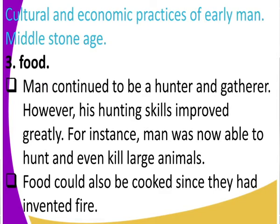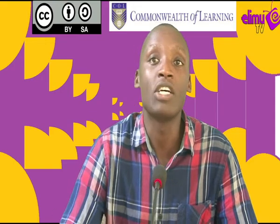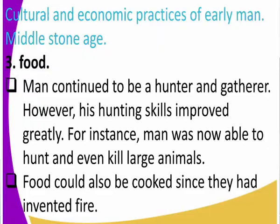First, let us look at how did man obtain food. We get to realize that man continued to be a hunter and a gatherer; however, his hunting skills improved greatly. This is due to the reason that he had improved tools. We also need to realize that food could also be cooked since he had invented fire. This is the period at which man invented fire, and with fire, man was able to roast meat and cook meat, unlike when he used to eat raw meat.